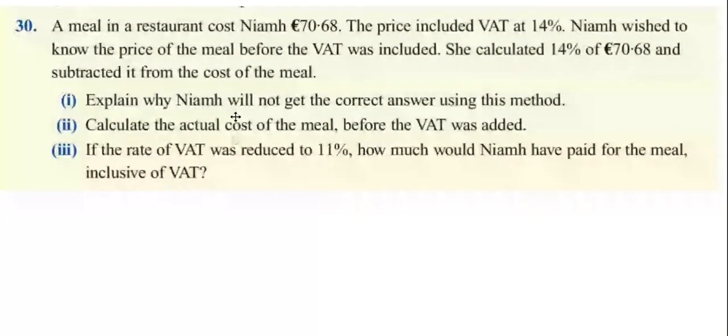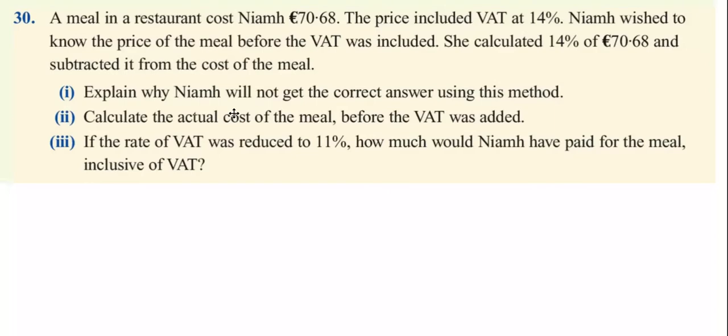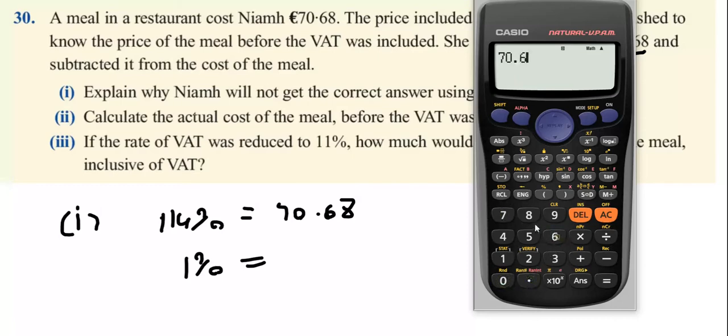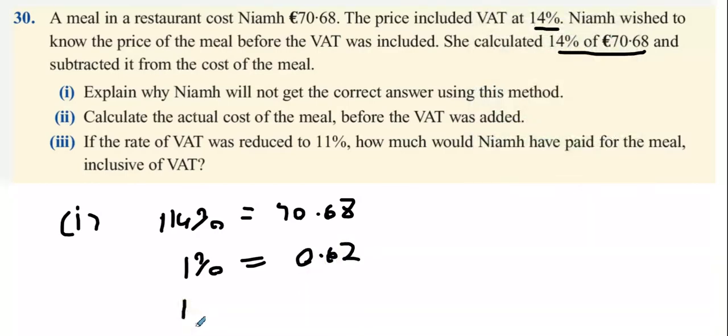Question 30, part two: A meal in a restaurant cost Niamh €70.68. The price included VAT at 14%. Calculate the actual cost of the meal before VAT was added. 114% of your meal is €70.68. 1% is €70.68 divided by 114, which is 0.62. Multiply by 100 and you get €62.